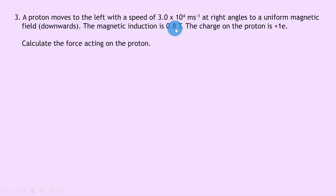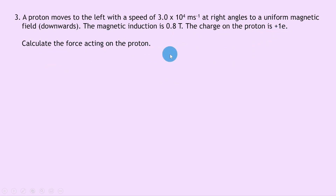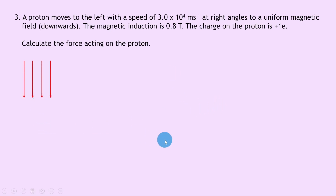Question three: a proton moves to the left with a speed of 3.0 times 10 to the 4 meters per second at right angles to a uniform magnetic field downwards. The magnetic induction is 0.8 tesla, and the charge on the proton is plus 1e. Calculate the force acting on the proton. Sketching the setup: magnetic induction b going downward, positively charged proton on the right moving to the left at right angles.